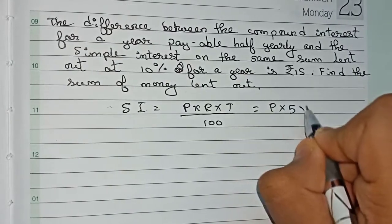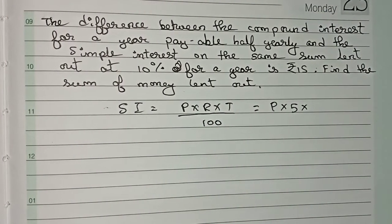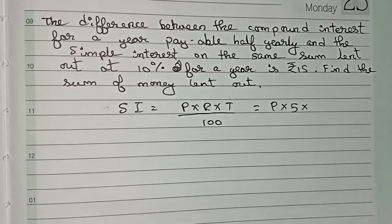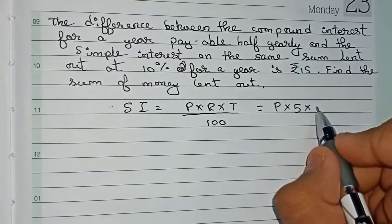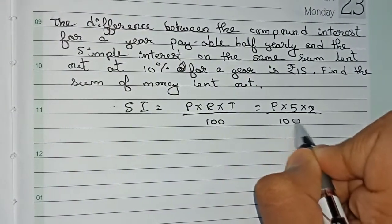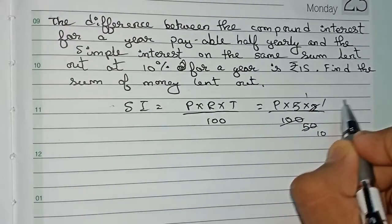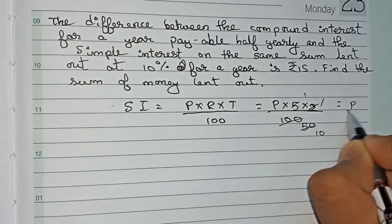Time is given as one year. If we convert it into time of six months, it will become two six-month periods. So it becomes P × 5 × 2 / 100. We simplify this to 10 by 100, so it becomes P/10.